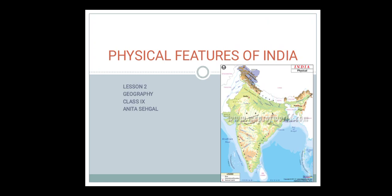Good morning students, today we will study lesson 2: Geography — Physical Features of India. We have studied in lesson 1 that India is entirely located in the northern hemisphere and it has 28 states and 8 union territories.